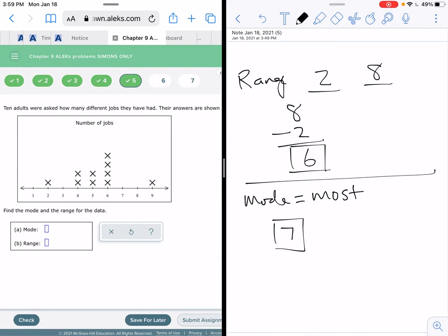And so it says find the mode and the range for the data. It's got it reversed this time. They're trying to be tricky. So mode remember is most. So the number that shows up the most in this set of data is six.